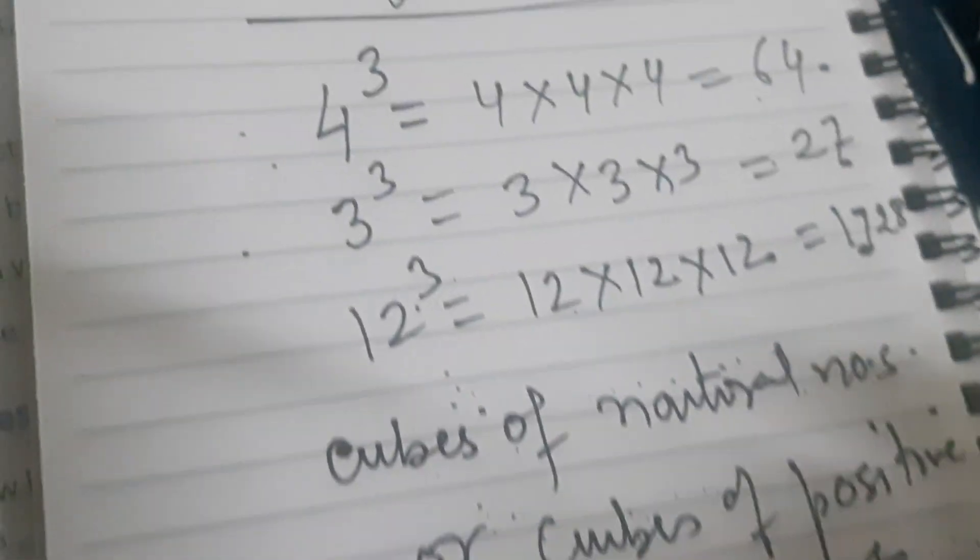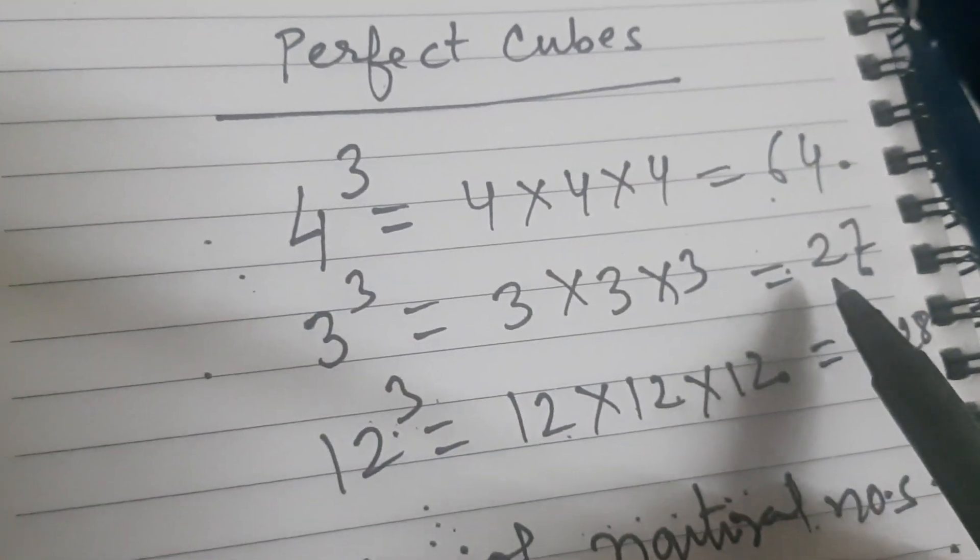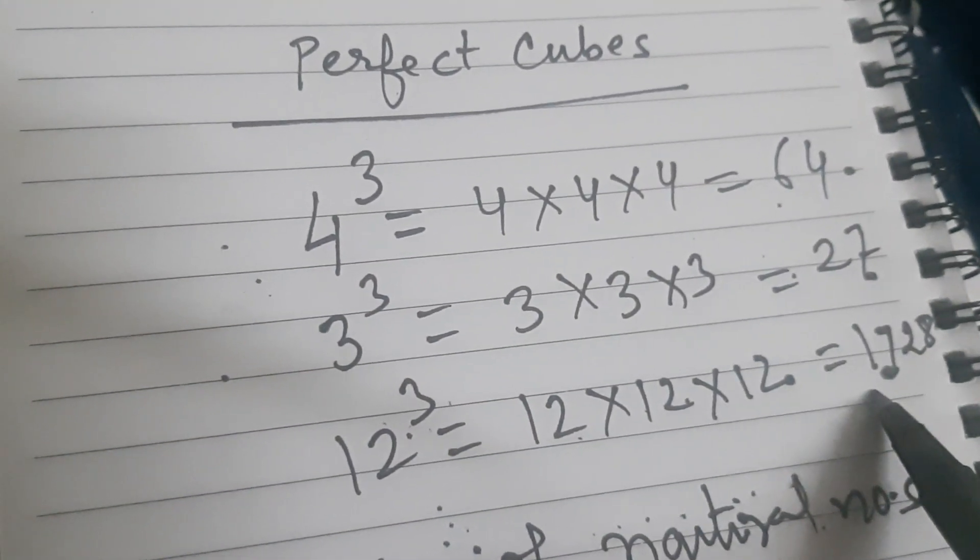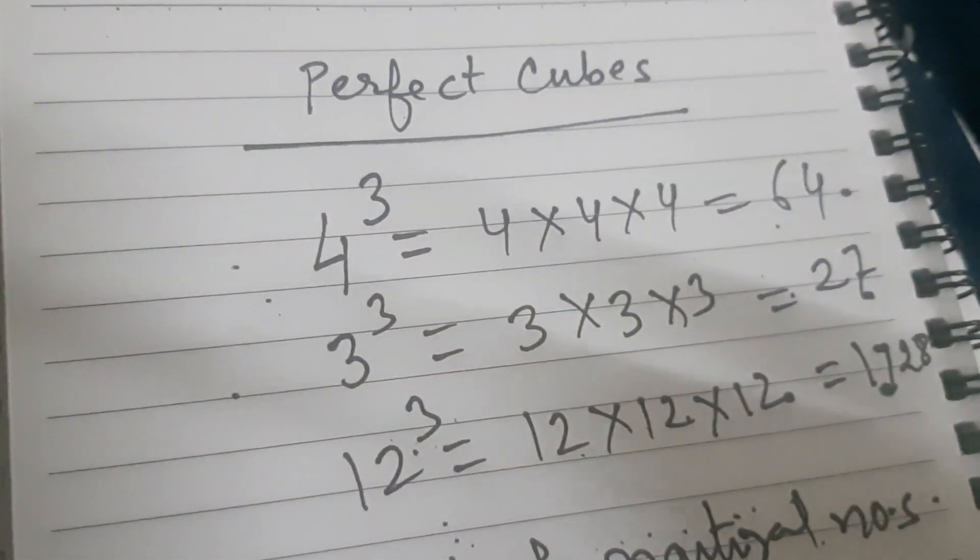I hope it is clear to you. So here, 64, 27, and 1728, these are all perfect cubes.